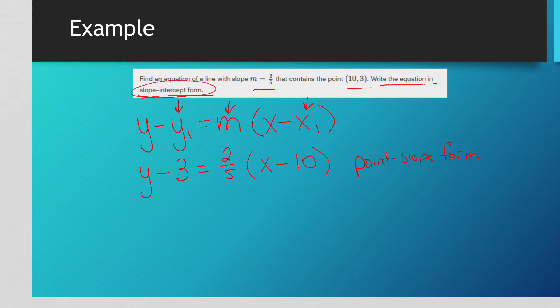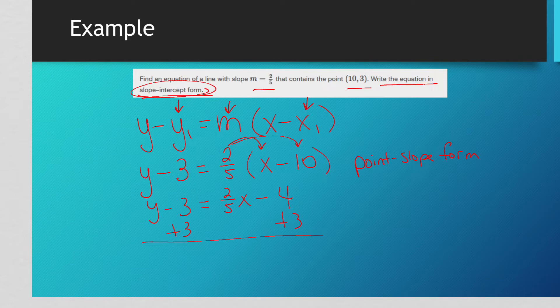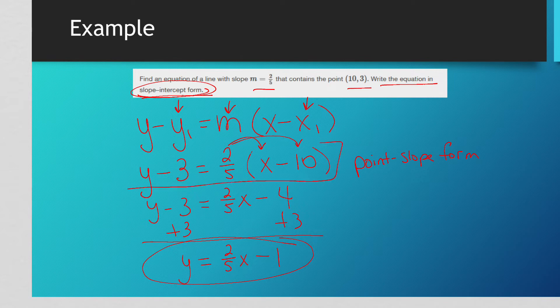But if it says slope intercept, then what you're going to need to do is you're going to need to distribute. We've got to get rid of the parentheses. 2/5 times minus 10 is going to be a minus, 5 goes into 10 twice, 2 times 2 is 4. And then we would add 3 to get the y by itself, to get it into slope intercept form. This is the exact same answer that we came up with in the last video for this problem. Let's try another one.